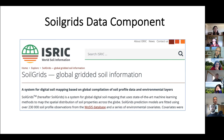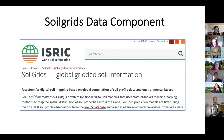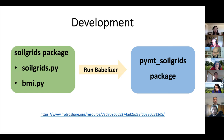As for the SoilGrids data component, it fetches global gridded soil information from the SoilGrids system. This system maps the spatial distribution of soil properties such as bulk density, clay, sand, and silt content. To create the data component, I first created the SoilGrids Python package. This package includes the soilgrids.py file, which has a class to download soil datasets from the SoilGrids system using its web coverage service.